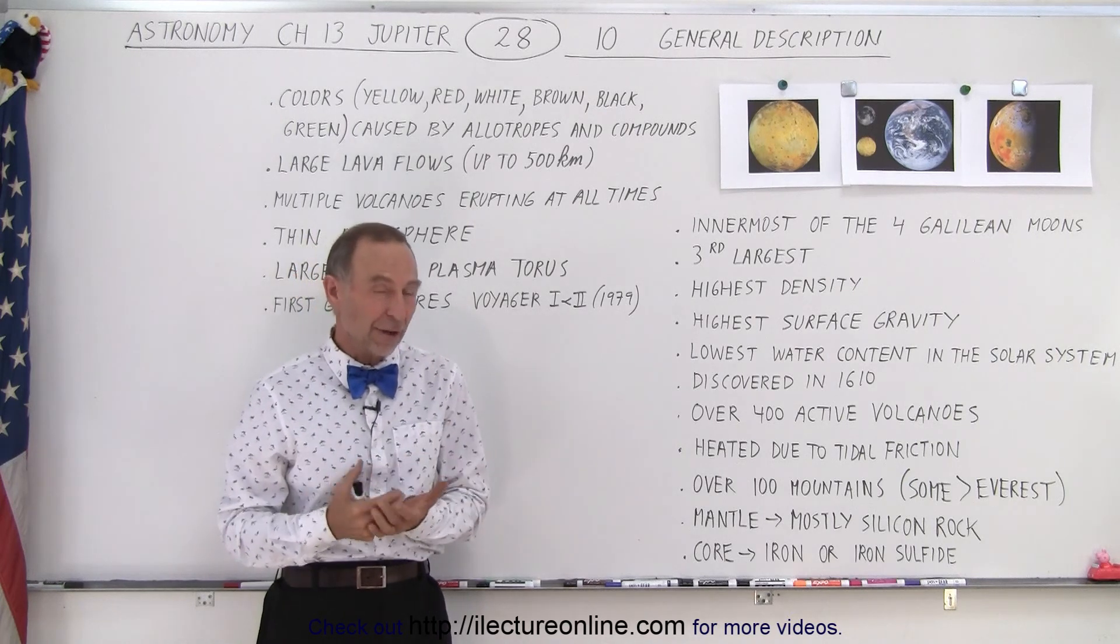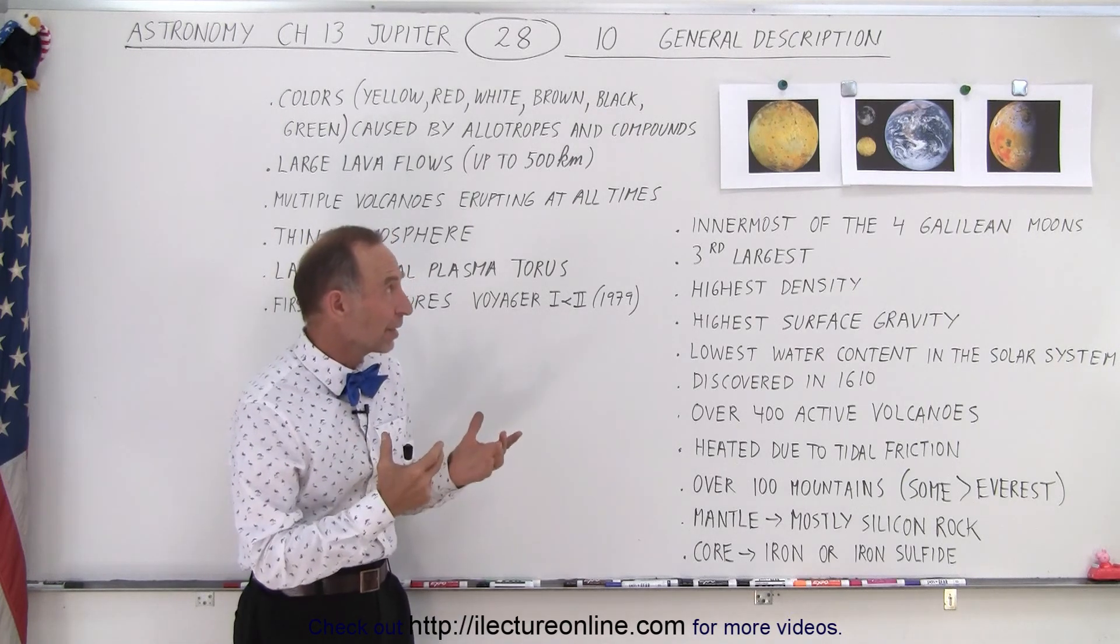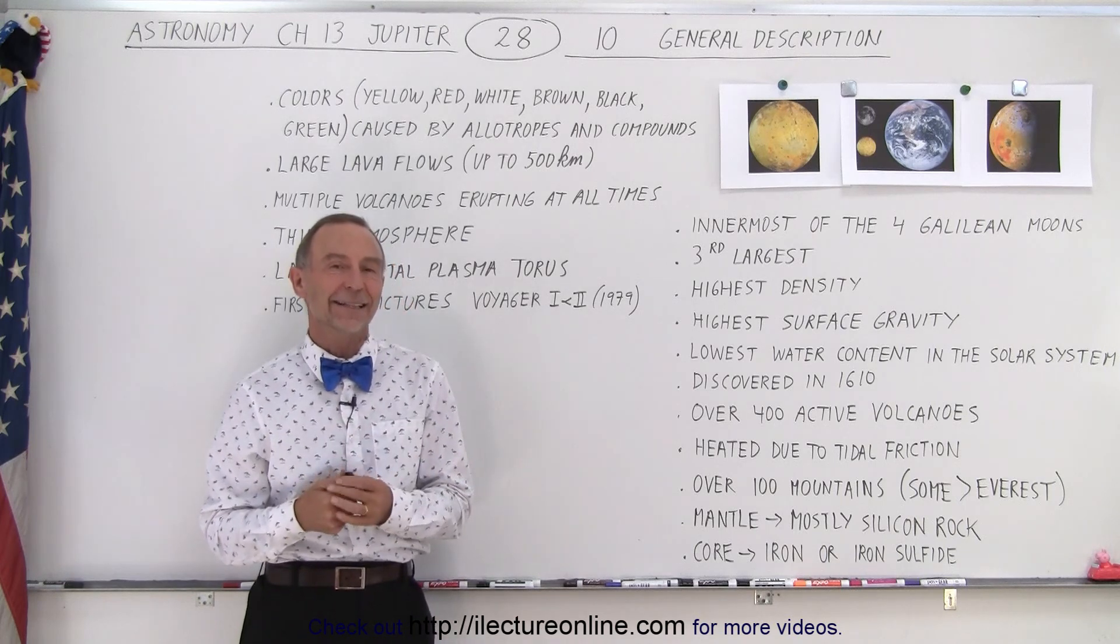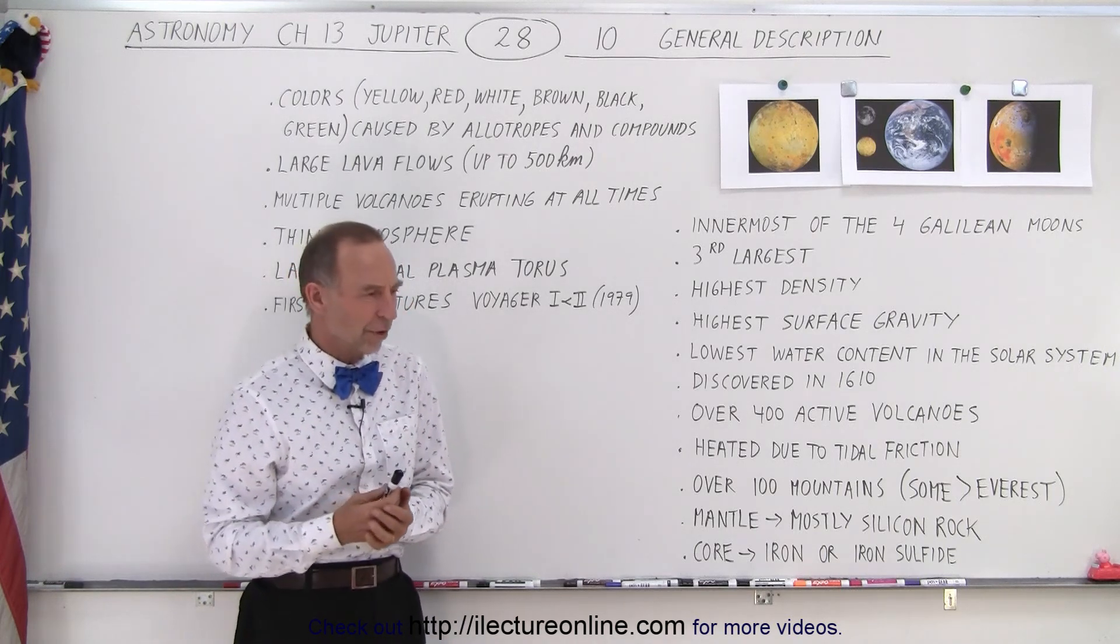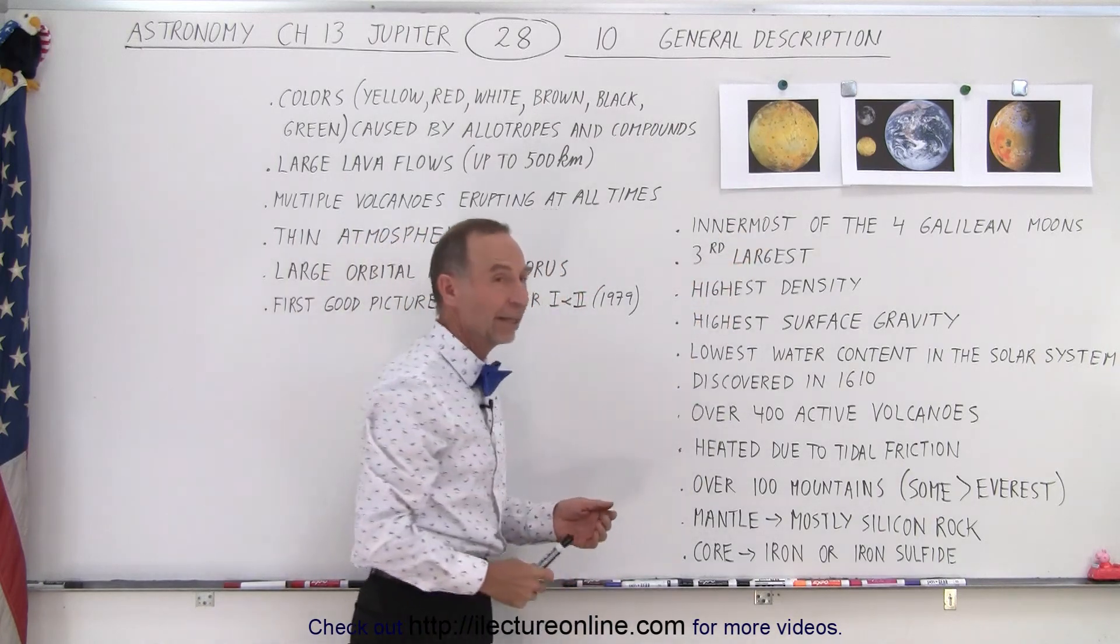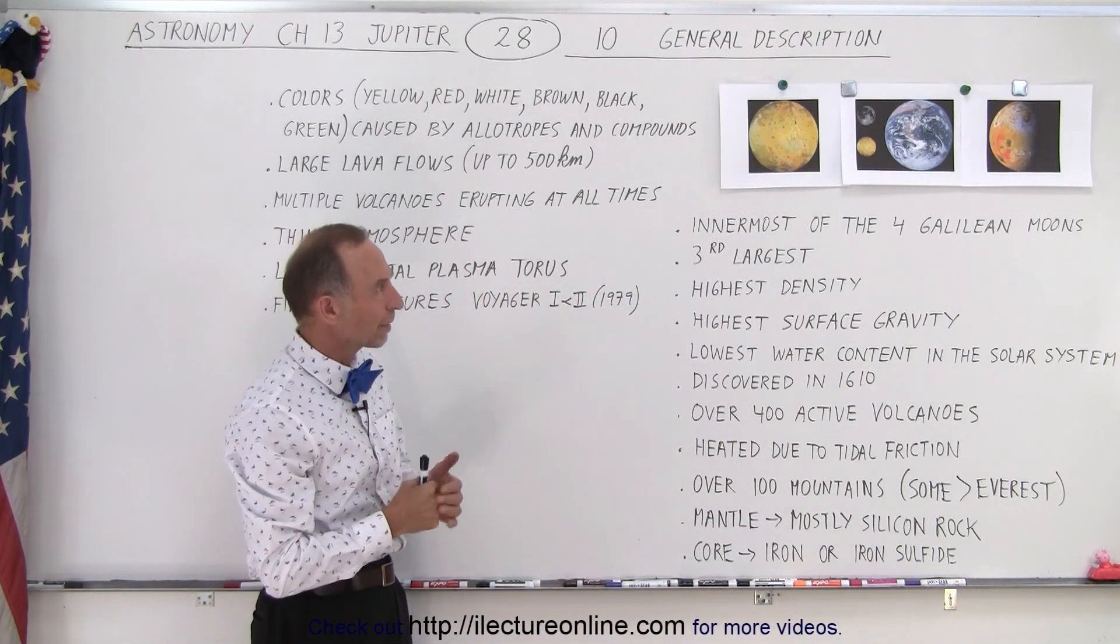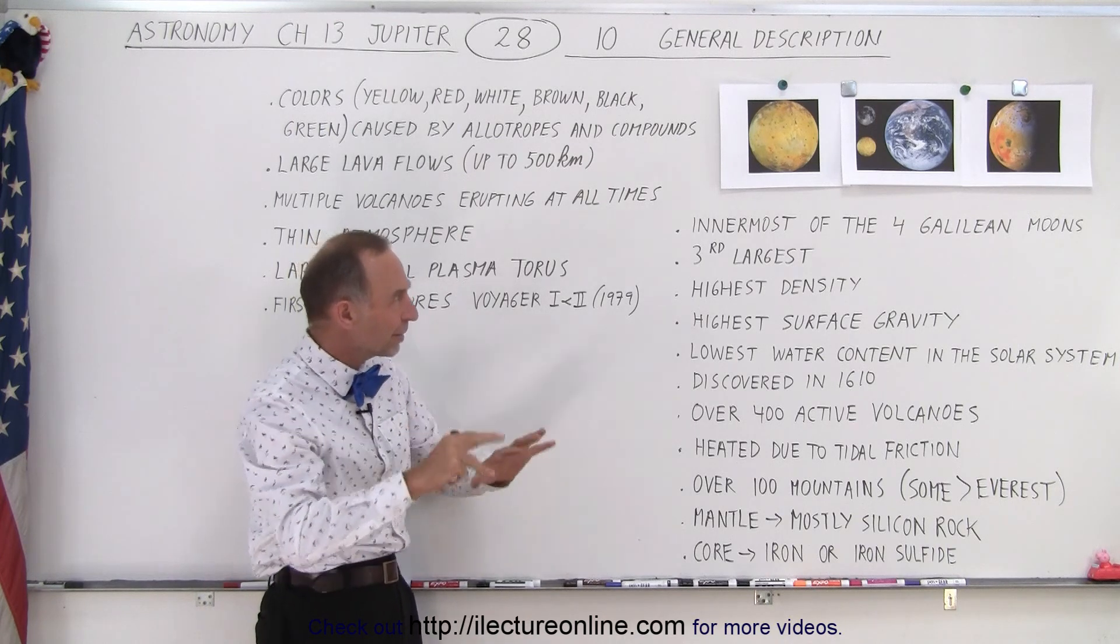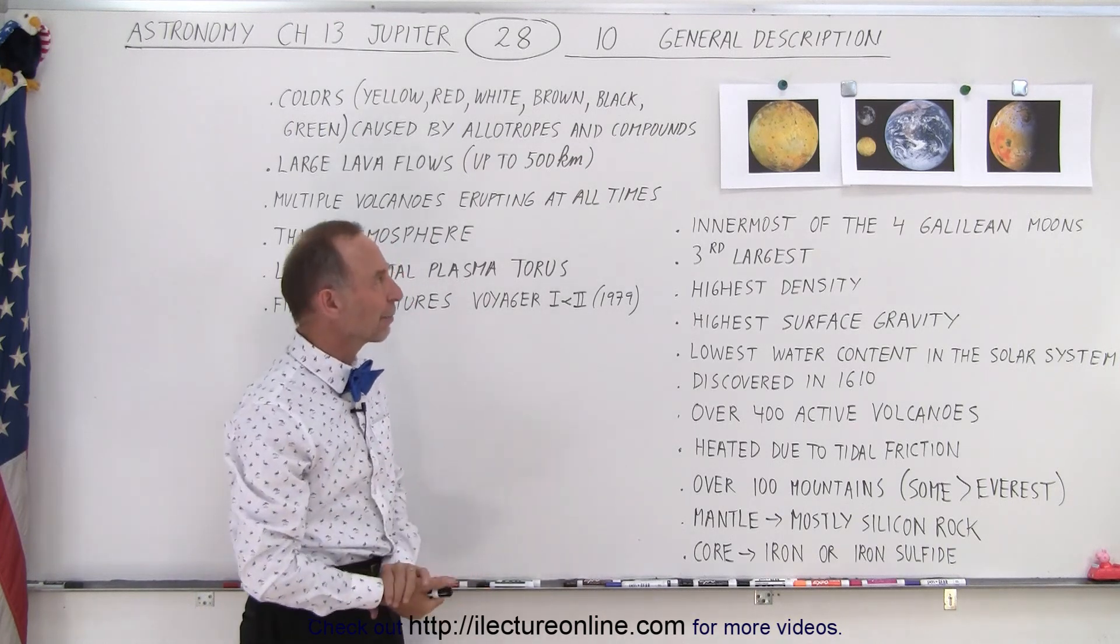Of course when we see a picture of Io, the first thing that pops out is we've never seen anything like it. It's almost unreal. It's almost unbelievable that something like this could actually exist, that it's actually a moon. It looks more like a picture of a pizza with the ingredients kind of spread around everywhere.